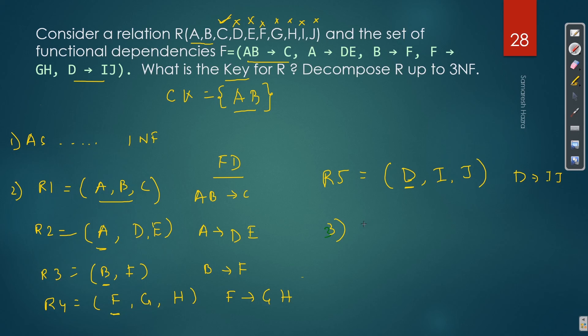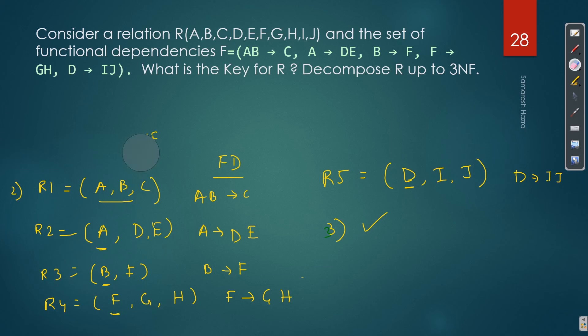There are no transitive dependencies in the relations which are in 2NF. That means all protected sub-relations are in 3NF as well. So the decomposition of R up to 3NF is complete.